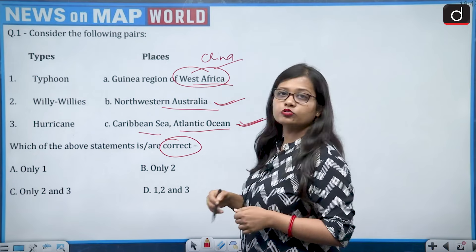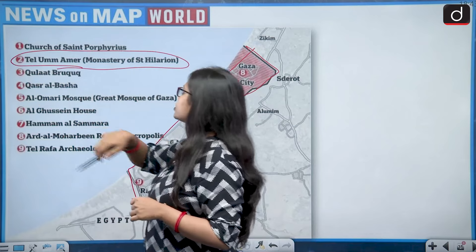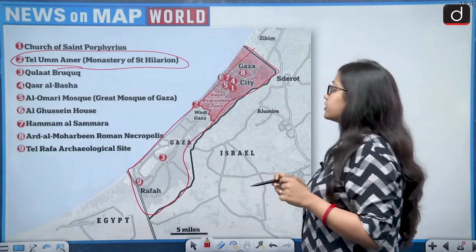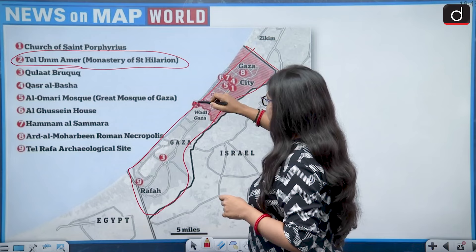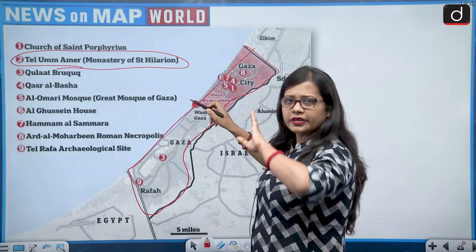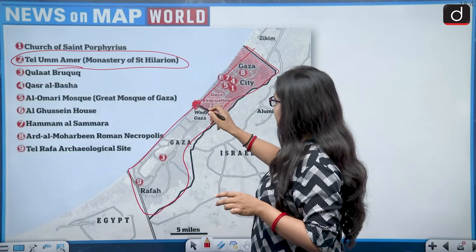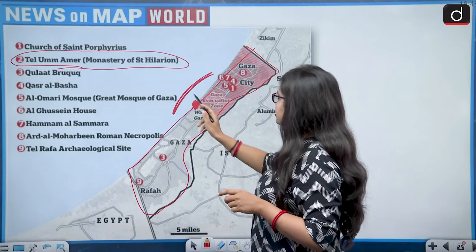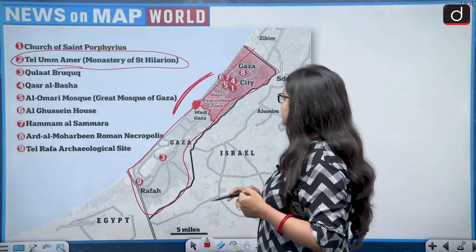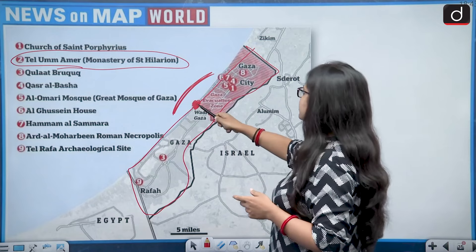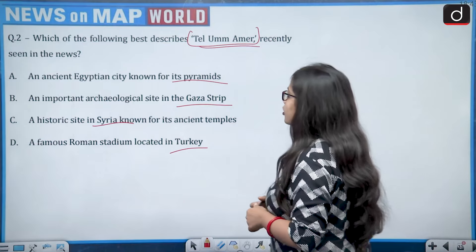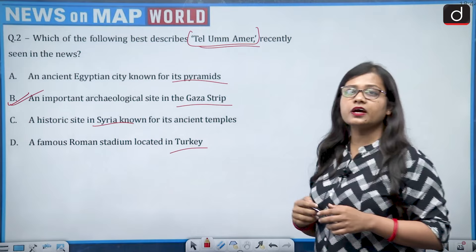Israel has been in the news for around a year because of the Israel-Hamas war. Zooming out on the map, Tell Amir is present in the Gaza Strip, which is in the southwestern region of Israel. It is a monastery of Saint Hilarion, located in the west-central part, touching the Mediterranean Sea on the western side. So the correct answer is option B — an important archaeological site in the Gaza Strip.